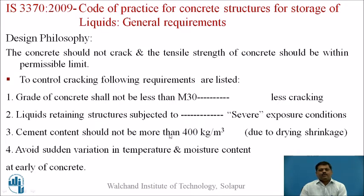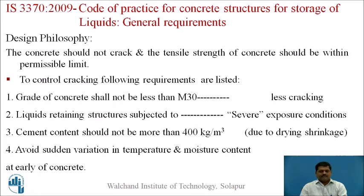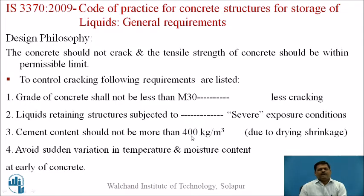Next, cement content should not be more than 400 kg per cubic meter. This limit exists because of drying shrinkage — if cement content is excessive, shrinkage is faster, causing hair cracks that may propagate, which is not acceptable in liquid retaining structures. This 400 kg/m³ limit excludes fly ash or GGBS; only pure cement content is restricted. This is due to high hydration and drying shrinkage at an early age.